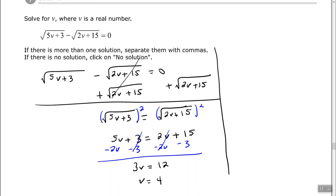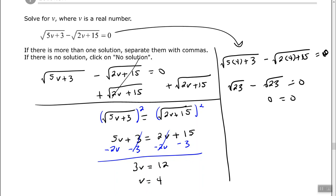Let's check to make sure that's correct. Using my original problem, replacing v with 4 gives us the square root of 5 times 4 plus 3 minus the square root of 2 times 4 plus 15. So I have the square root of 23 and then 8 plus 15 which is also 23. The square root of 23 minus the square root of 23 is 0. So v equals 4 is correct.